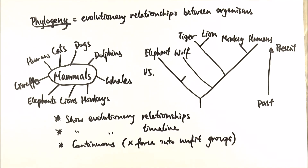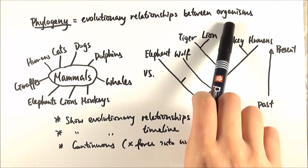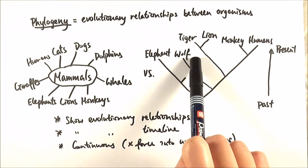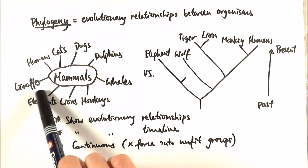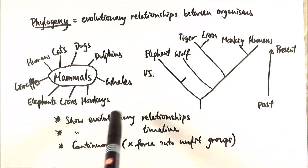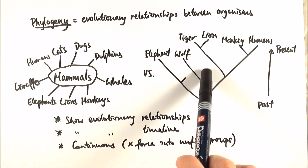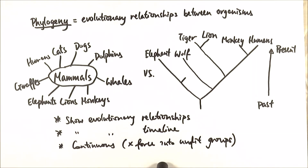Another good thing about phylogenetic trees is that they are continuous — they are continually growing and we can add branches as we get more information. Rather than forcing organisms into a Linnaean classification where some might not fit the same group entirely, here we can actually show they are somewhat related but not entirely.